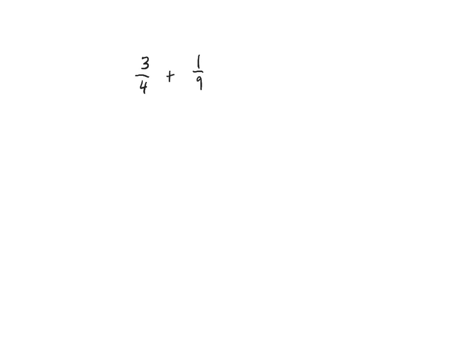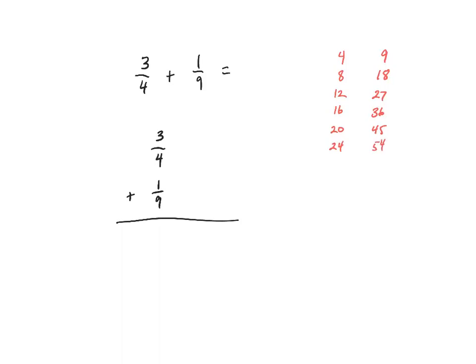Let's look at another example: three-fourths plus one-ninth. I write the problem vertically and notice I do not have a common denominator, so I need to find a common name. Counting by fours: 4, 8, 12, 16, 20, 24, and so on. Counting by nines: 9, 18, 27, 36, 45, 54. I don't see anything in common yet, so I continue — 28, 32, 36. I do see 36 on my fours list here, so thirty-six is my least common multiple.